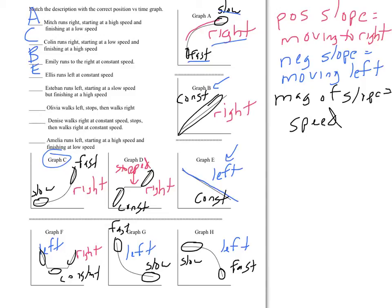Esteban runs left, starting slow and finishing at high speed. This is where it helps to have our notes. This is going left, starts slow, finishes fast. Graph H. A lot of people confuse graph G and graph H, and it's very easy to do, but if you've taken notes and you can clearly see what's happening, it's harder to do that.